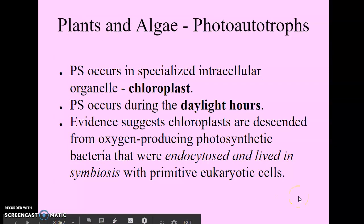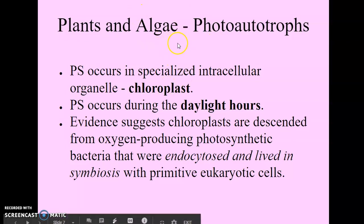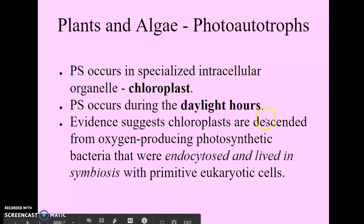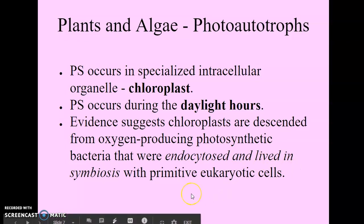While splitting water, oxygen is released into the atmosphere for oxidative phosphorylation in cell respiration. Photoautotrophs are also found in plants and other algae, where photosynthesis occurs in a specialized intracellular organelle called the chloroplast, usually during daylight hours. Evidence supporting the endosymbiont theory suggests that chloroplasts are descended from oxygen-producing photosynthetic bacteria — cyanobacteria — that were endocytosed and lived in symbiosis with primitive eukaryotic cells.